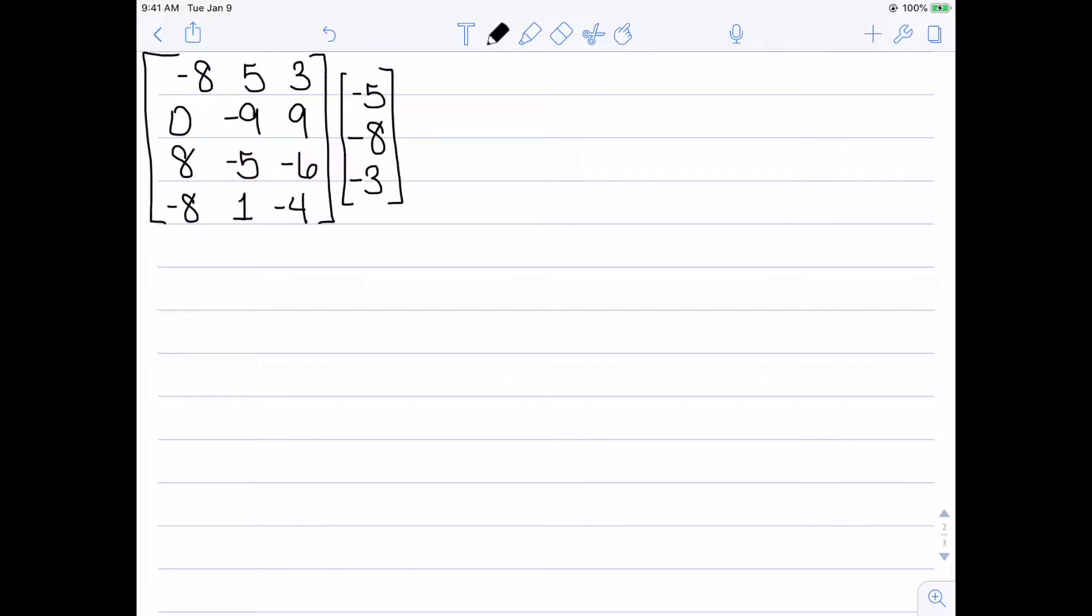So here I have a matrix with four rows and three columns and a vector with three rows. So the number of columns in my matrix does match the number of rows in my vector, and I want to multiply them.